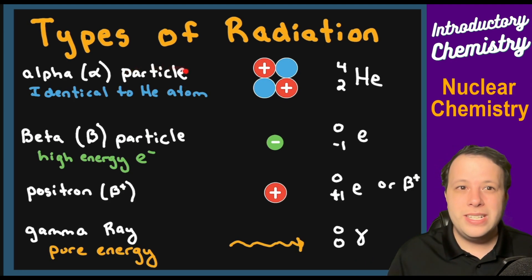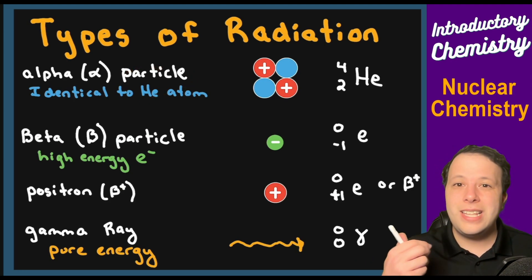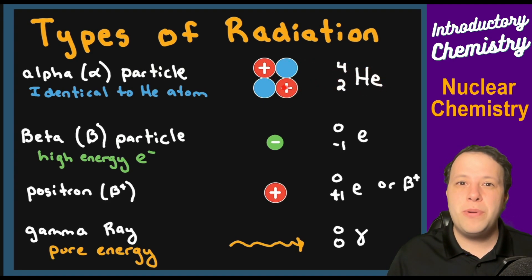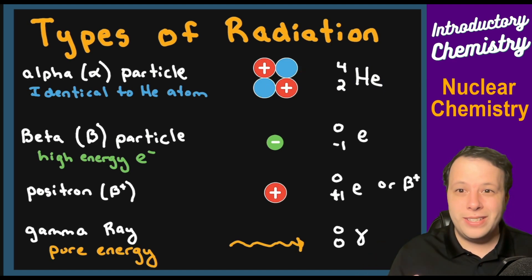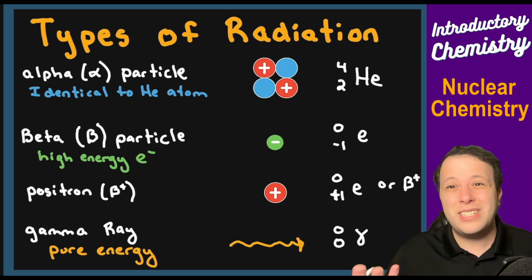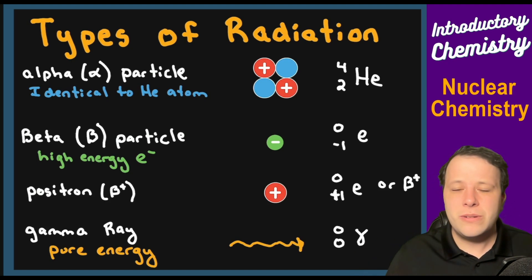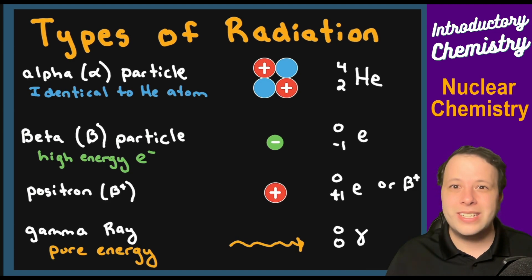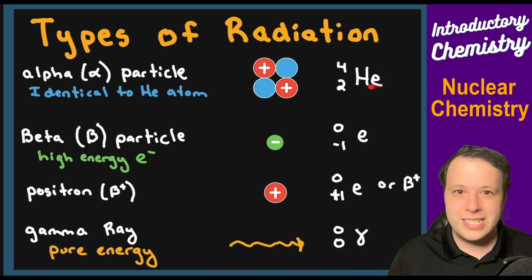The first one is an alpha particle. This is the heaviest out of all of them because it is represented with a helium atom — equivalent to two protons and two neutrons breaking off of a nucleus. It's a very slow-moving particle because it's bigger, but even though it's slower, it can do a lot of damage if it's inside of you. If you ingest it, it's not going to be able to get out — it's something very, very dangerous. So we write that as a helium atom.